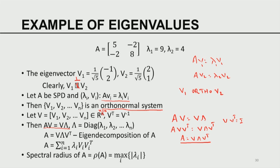This eigendecomposition of A can be expressed in element form as the sum of outer products: A equals the sum of lambda_i times v_i vᵢᵀ. Each v_i vᵢᵀ is a rank-1 matrix weighted by lambda_i. So A can be expressed as the weighted sum of rank-1 matrices, each corresponding to an eigenvector.